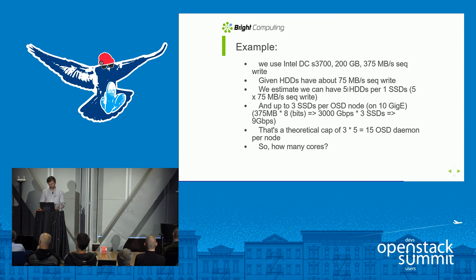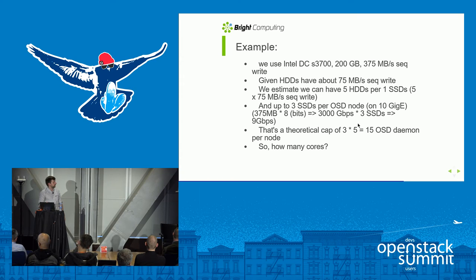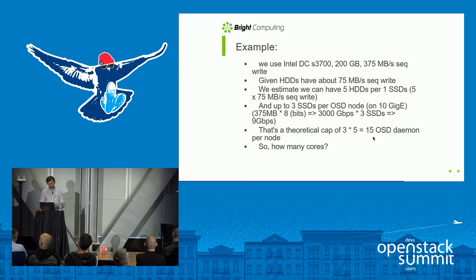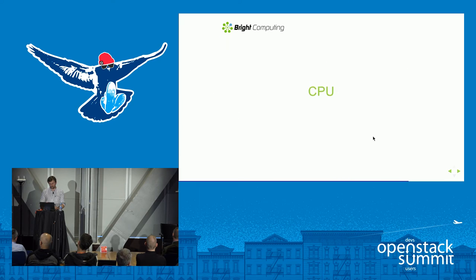In our case, with 10 GbE networking we can have as many as 15 HDDs — three SSDs with five HDDs behind each one. That's pretty much the theoretical maximum number of OSDs we can have in our nodes. Now let's look at CPU: how many cores should we aim for, and how many sockets should we need?